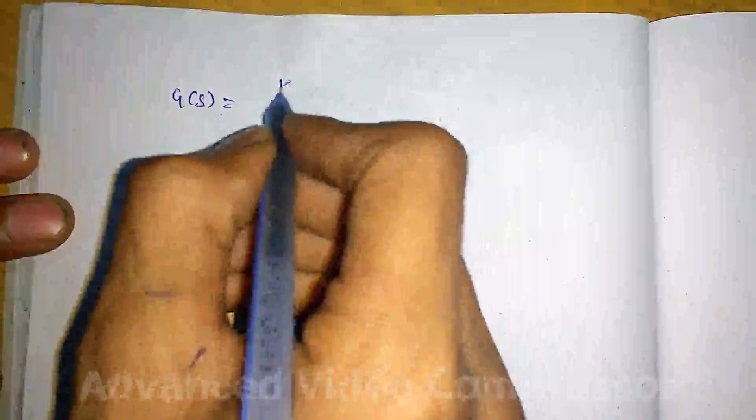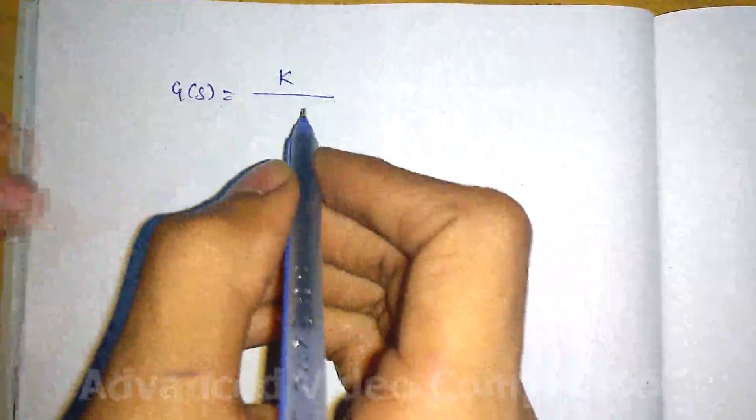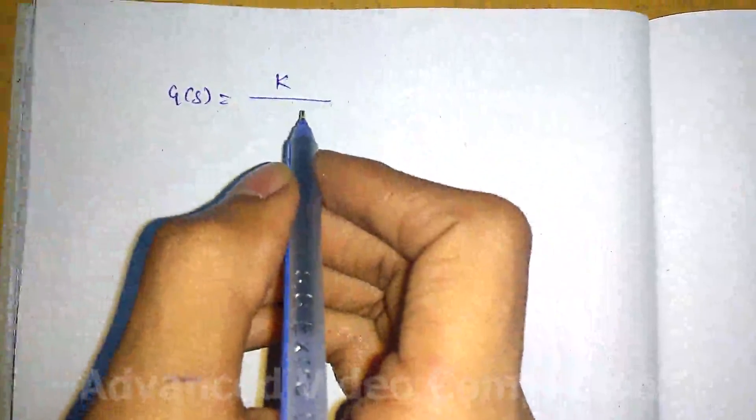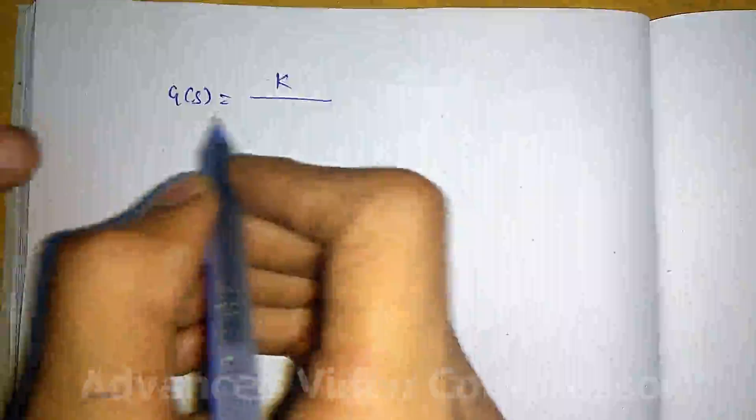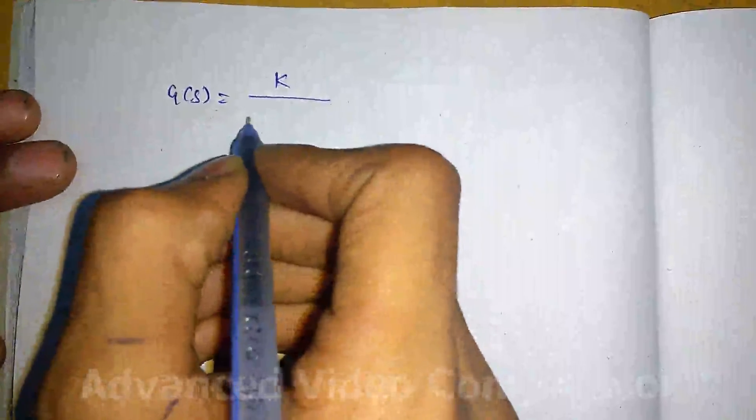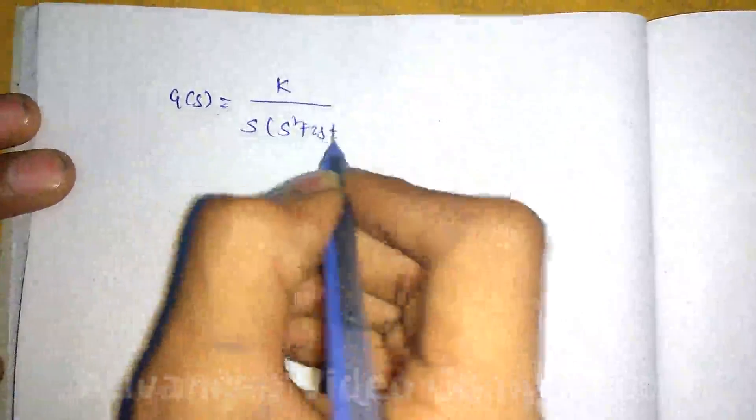The topic of our discussion today is root locus — plotting root locus. Let us take an example here. Suppose the given closed-loop transfer function with unity feedback is K divided by s times (s² + 2s + 2).